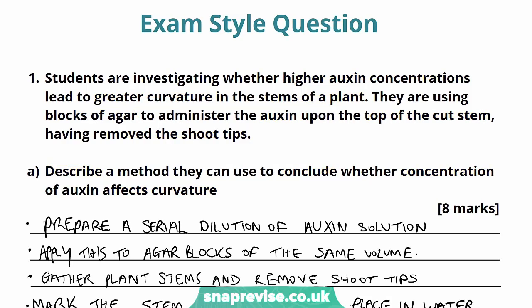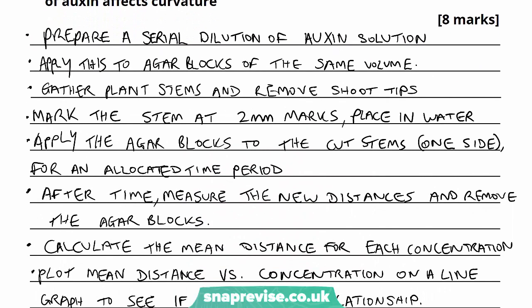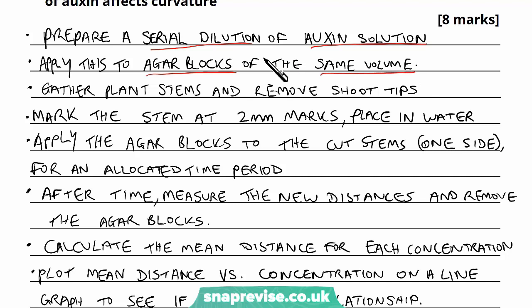If I show you what I've written for an answer here: the first thing is that you prepare a serial dilution of the auxin solution, because without this you can't create the agar blocks with the auxin. Then you apply this to the agar blocks — they all have to be of the same volume. So now we have the agar blocks ready with the auxin so that we can administer that to the stems.